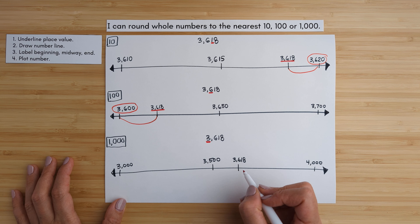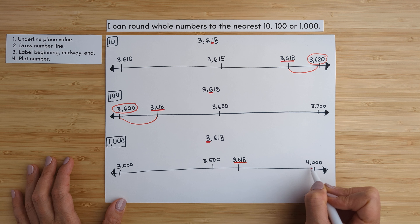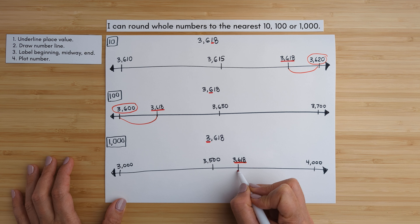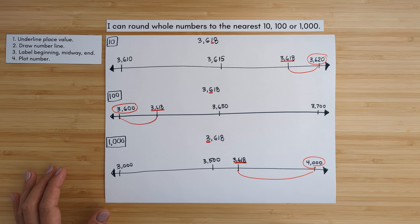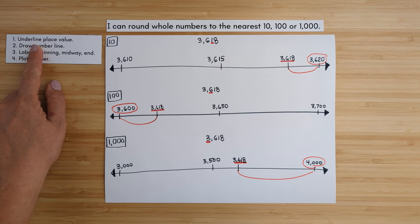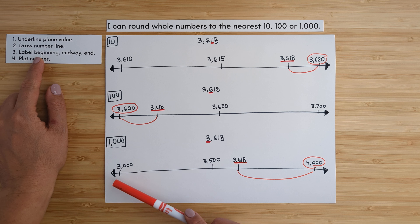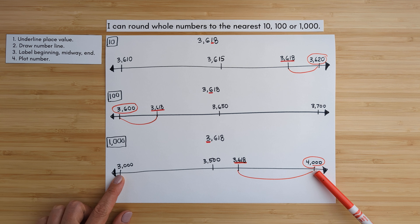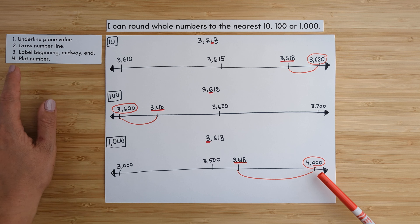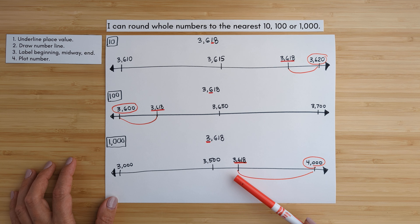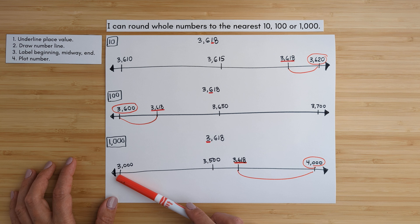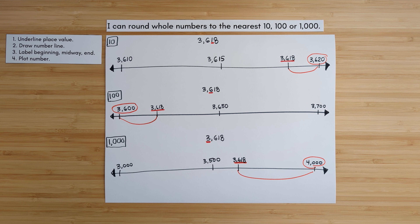We check whether 3,618 is closer to 4,000 or 3,000 — it's definitely closer to 4,000. So when rounding using a number line, don't forget: underline the place value, draw the number line, label your beginning, midway, and end number — sometimes it helps to do beginning, then end, then midway. Plot your number and see which one it's physically closer to. Is it closer to rounding up or rounding down? And that's it.